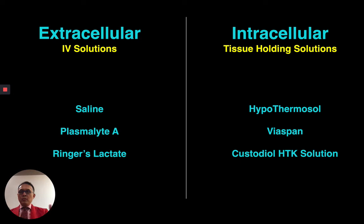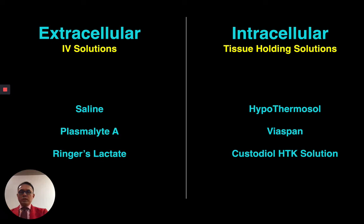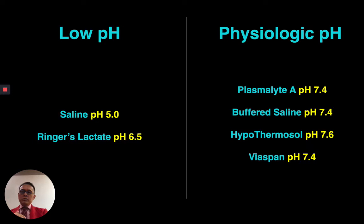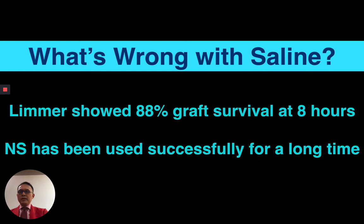Extracellular versus intracellular — which is better? With extracellular fluid, sodium and calcium rush into the cell causing it to swell. If you keep the external environment similar to the intracellular environment, there's less chance of this influx and cell rupture. Extracellular fluids are basic IV solutions used for many years. Intracellular fluids are specifically tissue holding solutions used in liver and organ transplants. Saline and Ringer's lactate have a low pH that can exacerbate graft damage, while Plasmalite A and intracellular fluids have a better physiologic pH.